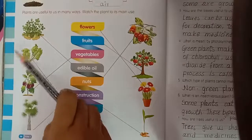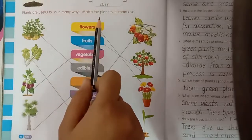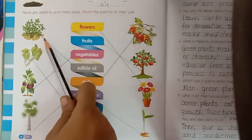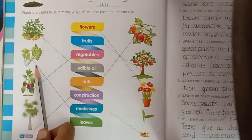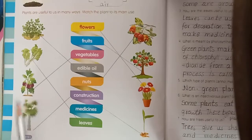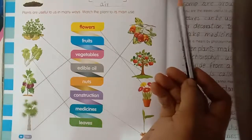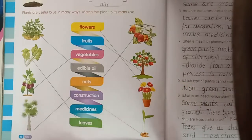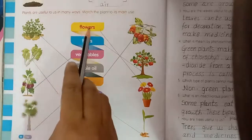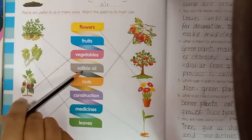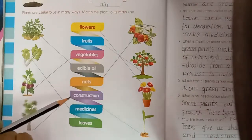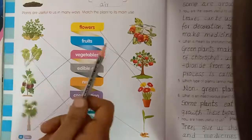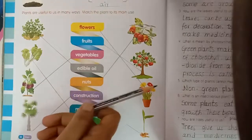See here children, plants are useful to us in many ways. Match the plant to its main use. Groundnut plant, leafy vegetable, brinjal, palm tree, cashew, apple, flour, tamarind. Uses: flowers, fruits, vegetables, edible oil, nuts, construction, medicines, leaves.